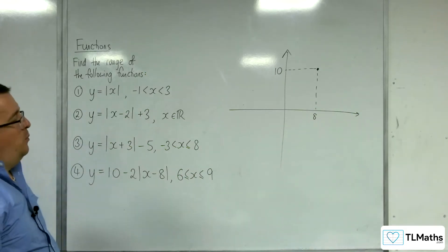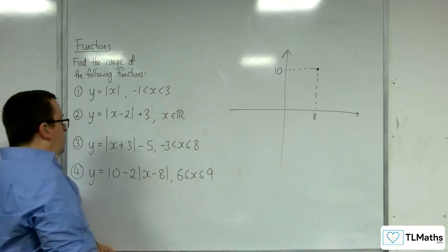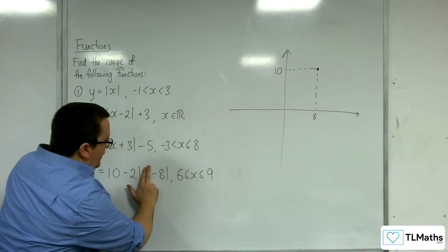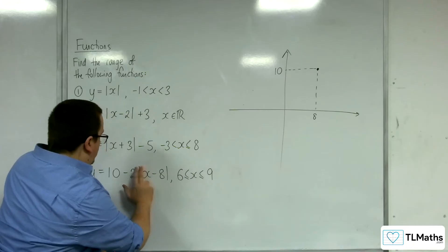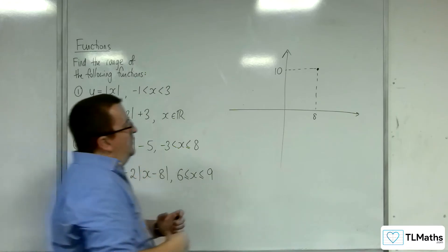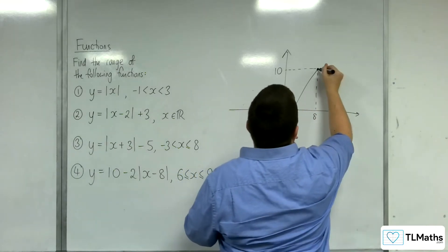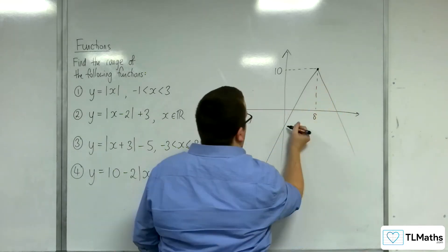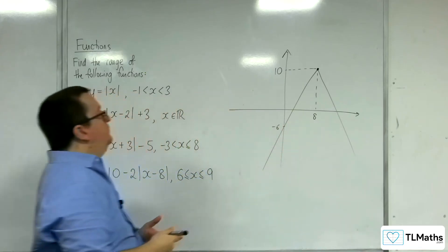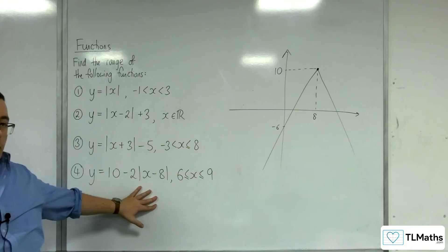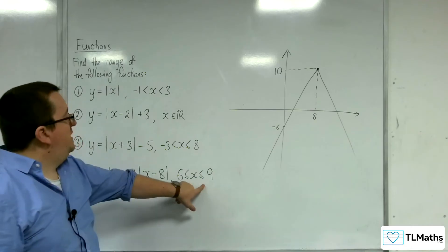Now, I should probably be a little bit more careful about where it's crossing the y-axis here. So when x is 0, we're going to get the modulus of minus 8, so that's just 8. So 10 take away 16, so minus 6. So it would look something like this. So that would be minus 6. So that is what the graph looks like when x belongs to the real numbers.